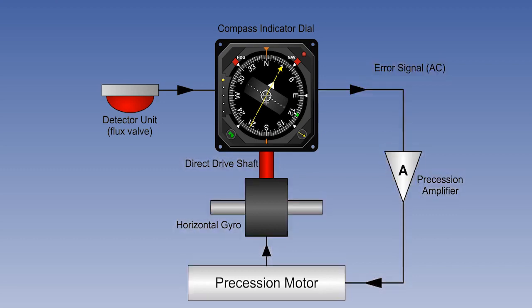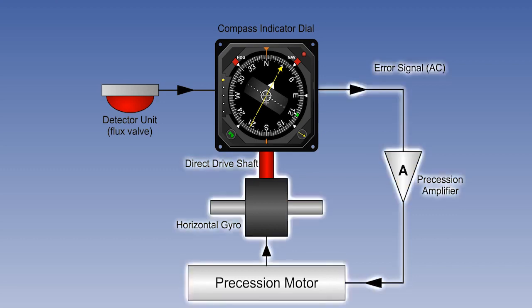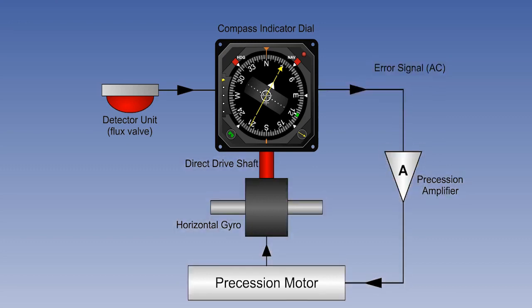The system has no way of telling whether the error is in the flux valve or the gyro, and so the error signal will start to drive the gyro to follow the flux valve. However, the precession motor is designed to take the error out slowly, correcting the gyro at a rate of only three degrees a minute, or thereabouts.